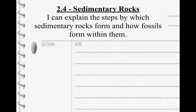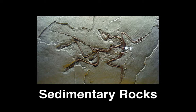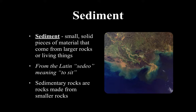If you need to pause to get this, go ahead and pause. So this is sedimentary rocks, and I've got a picture of a fossil here. Interesting story about that that I might share with you later. When we talk about sedimentary rocks, we need to talk about sediment. Sediment is small solid pieces of material that come from larger rocks or living things. It's from the Latin 'sedio,' meaning to sit, and sedimentary rocks are rocks made from smaller rocks.